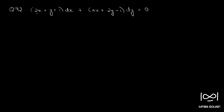A similar question was discussed before. If you rewrite, we will get dy/dx equal to minus (2x + y + 1) divided by (4x + 2y - 1).